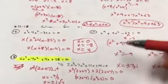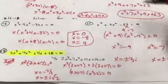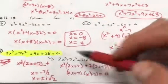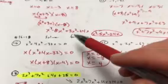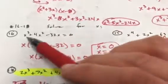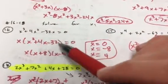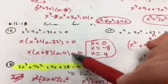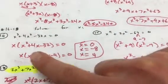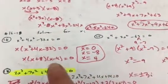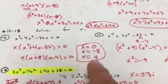I made number 18 a little bit too hard — I want a 14 there instead, so that's one to change. On number 16, take out the x they all have in common and factor using the cover-a method: x equals 0, x equals negative 8, and x equals 4.